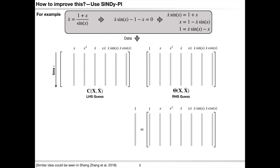For example, we could take out term 1 from the left-hand side library and form a sparse regression problem. To avoid a trivial solution such as 1 equals 1, we have to remove term 1 from the right-hand side library. Since term 1 is part of the implicit dynamics, when we perform sparse regression, we will get a sparse model that is really accurate on the testing data.